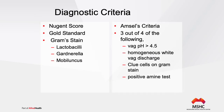To diagnose bacterial vaginosis or candidiasis, the laboratory provides a Nugent score, which is the gold standard for determining bacterial vaginosis. A gram stain will show the presence or absence of lactobacilli, Gardnerella, and Mobiluncus. Then there is Amsel's criteria — you need three out of four criteria before making a diagnosis of bacterial vaginosis.